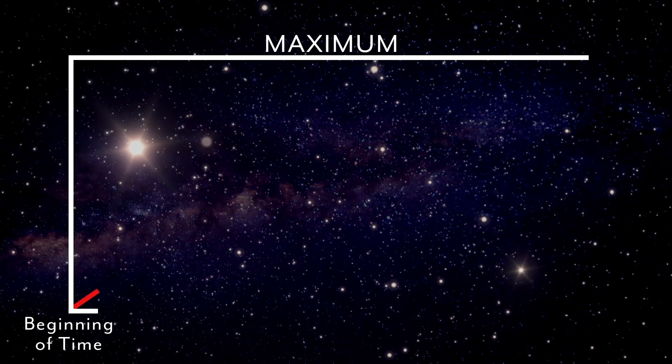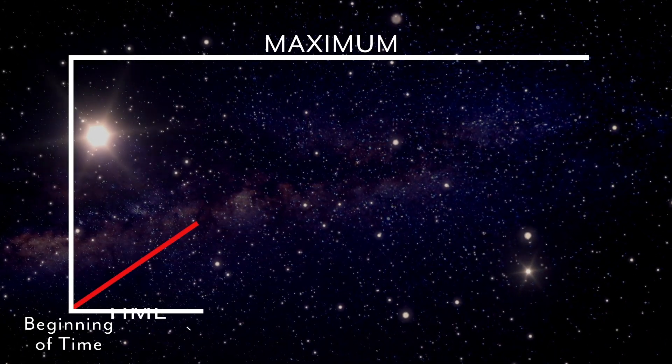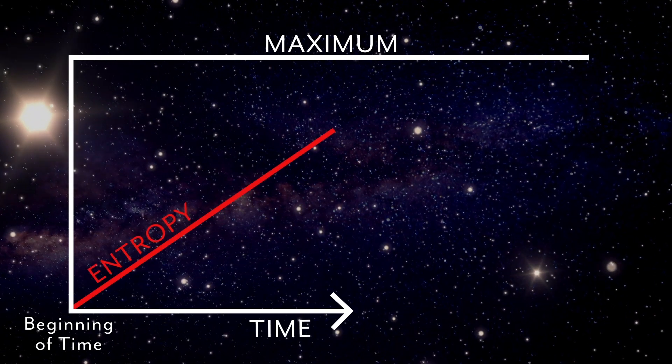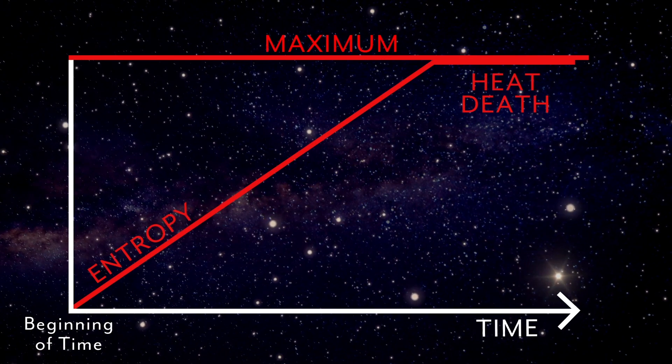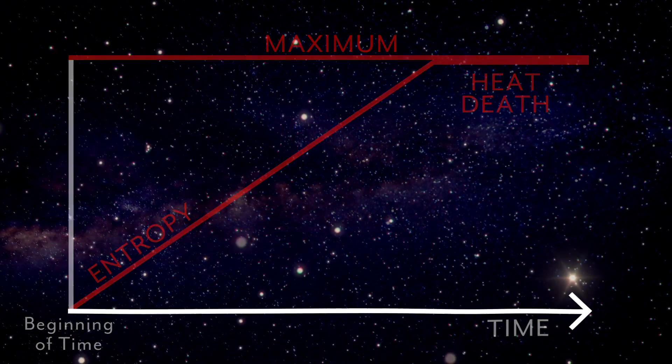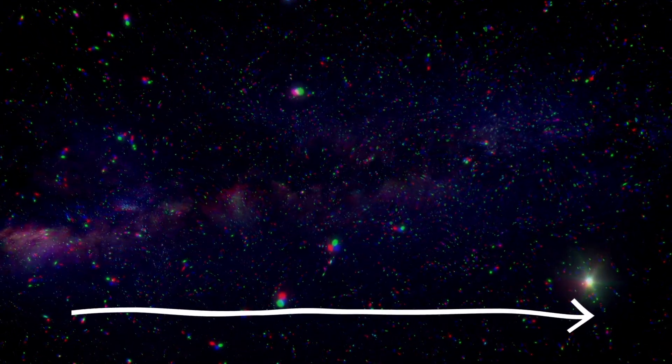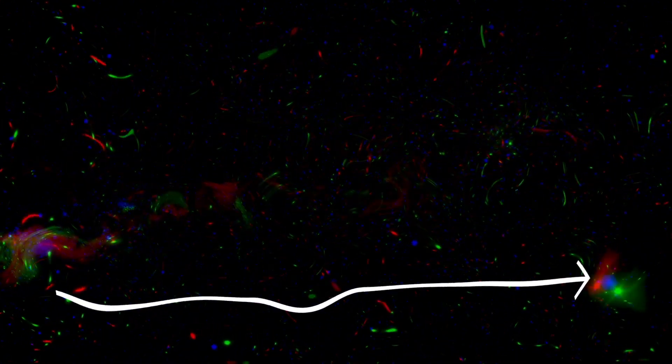Because the second law of thermodynamics says that entropy has to increase moving forward in time, that implies that if the entropy is already at its maximum, it cannot increase anymore. And so the arrow of time is lost. You can't say that we're moving forward in time anymore if entropy is not increasing anymore. In that sense, once you get to the heat death, once you get to that maximum entropy state, time doesn't really have a meaning.